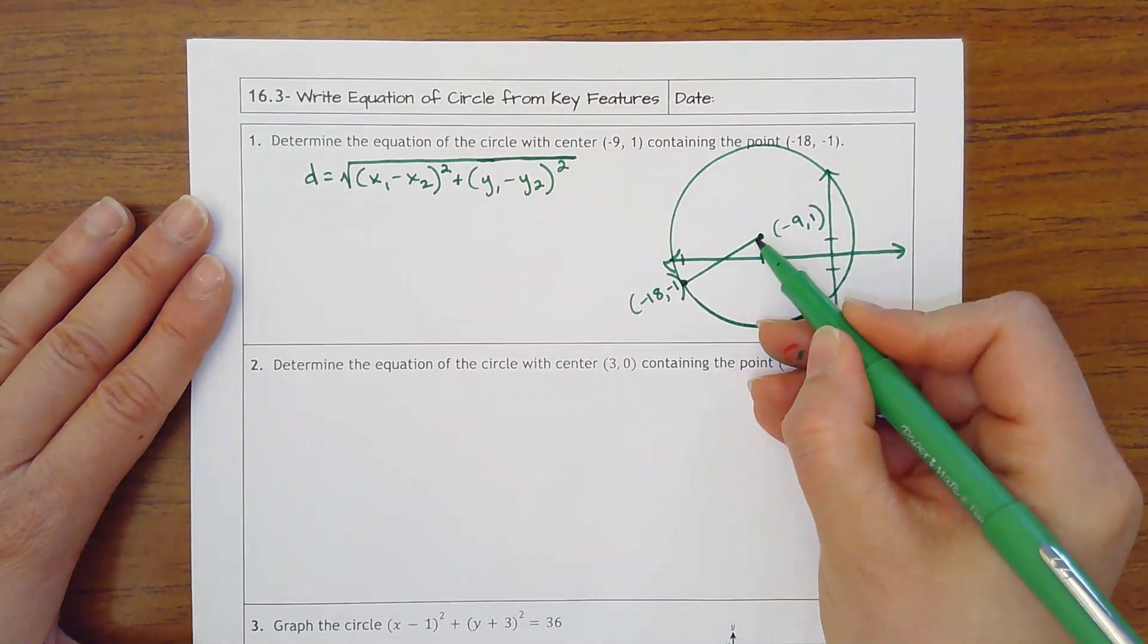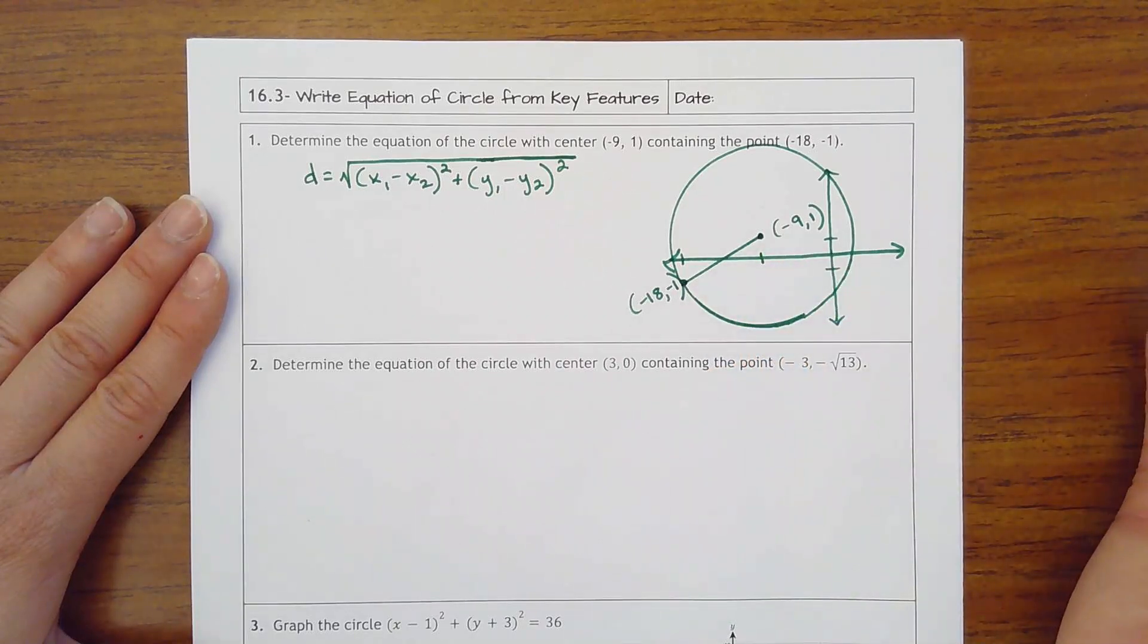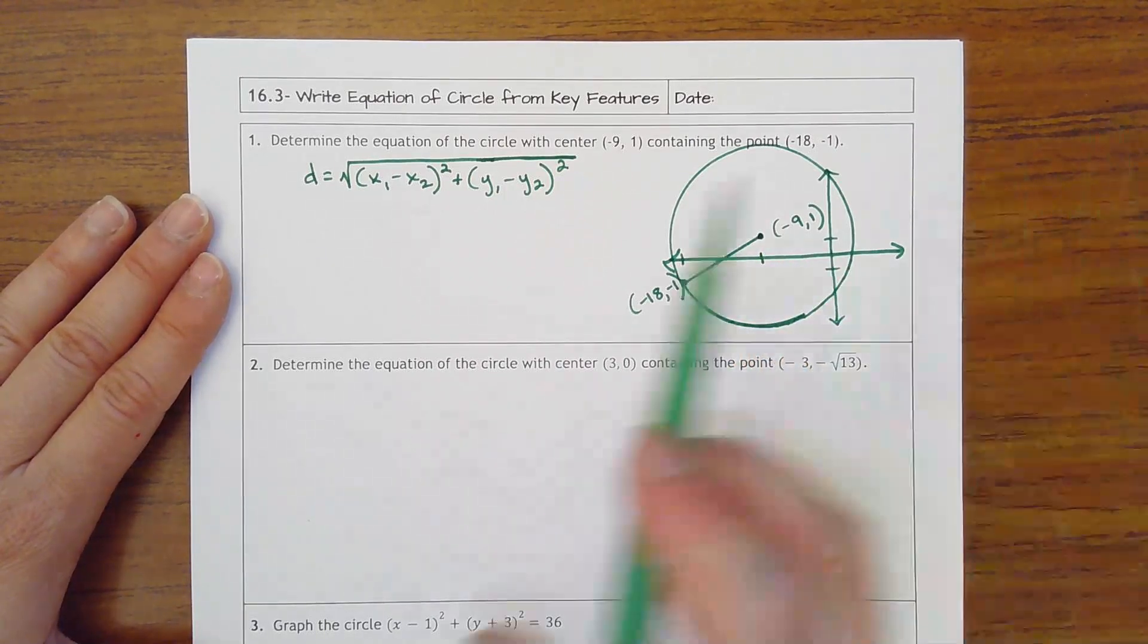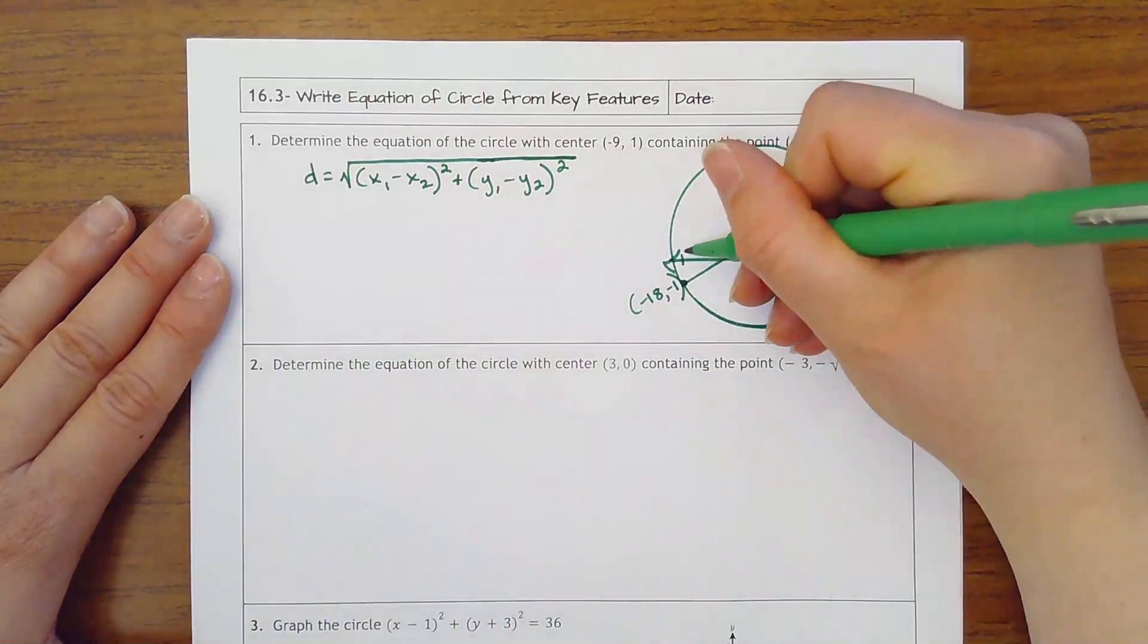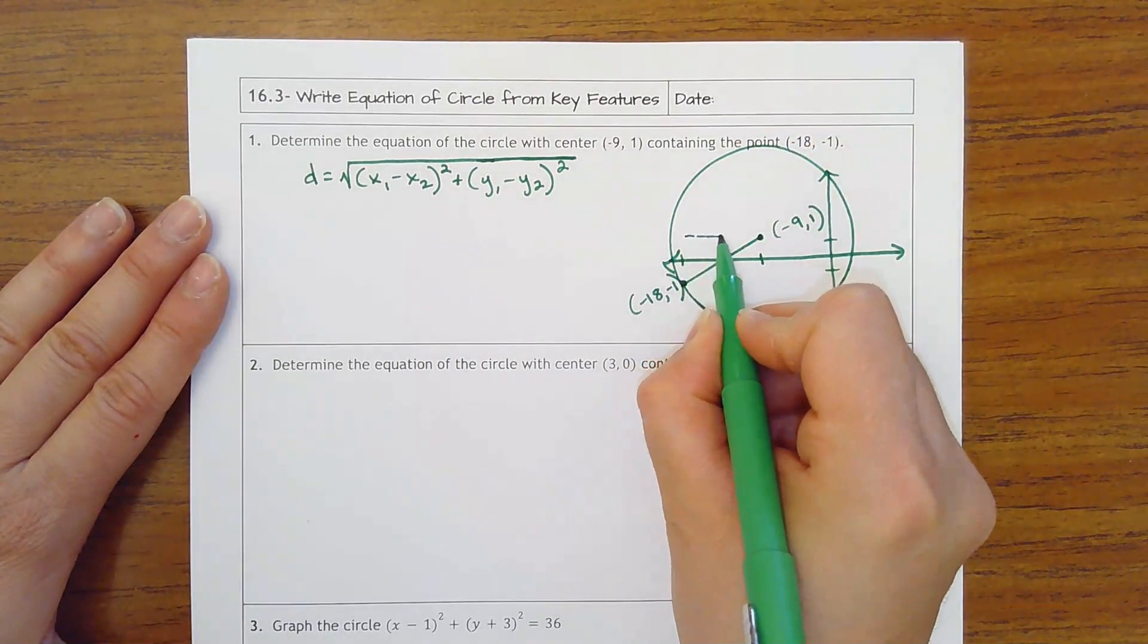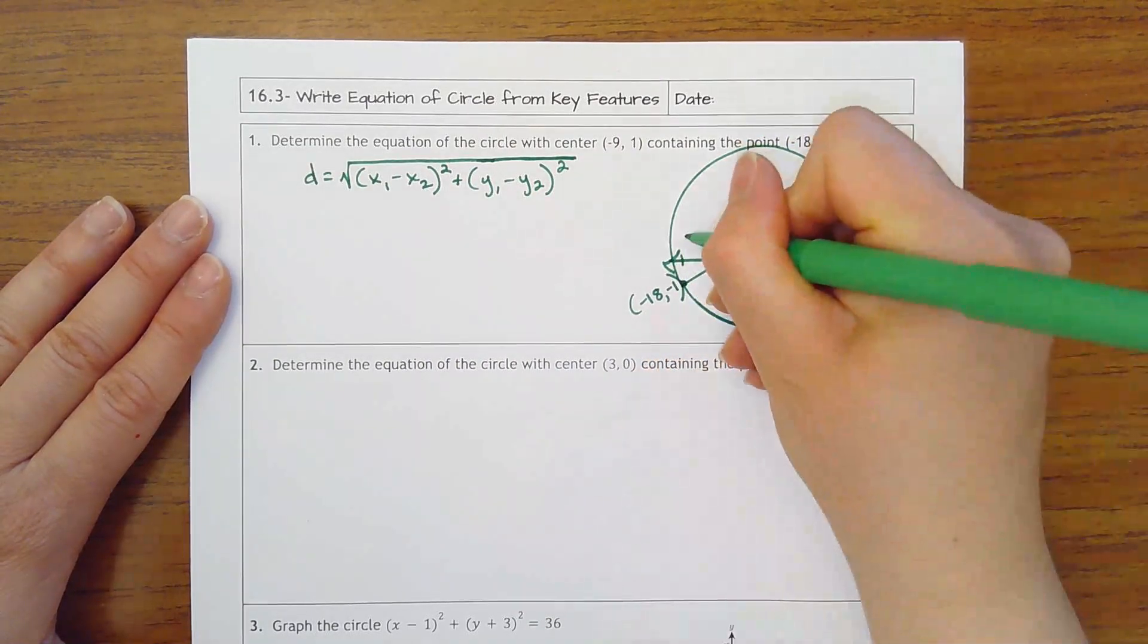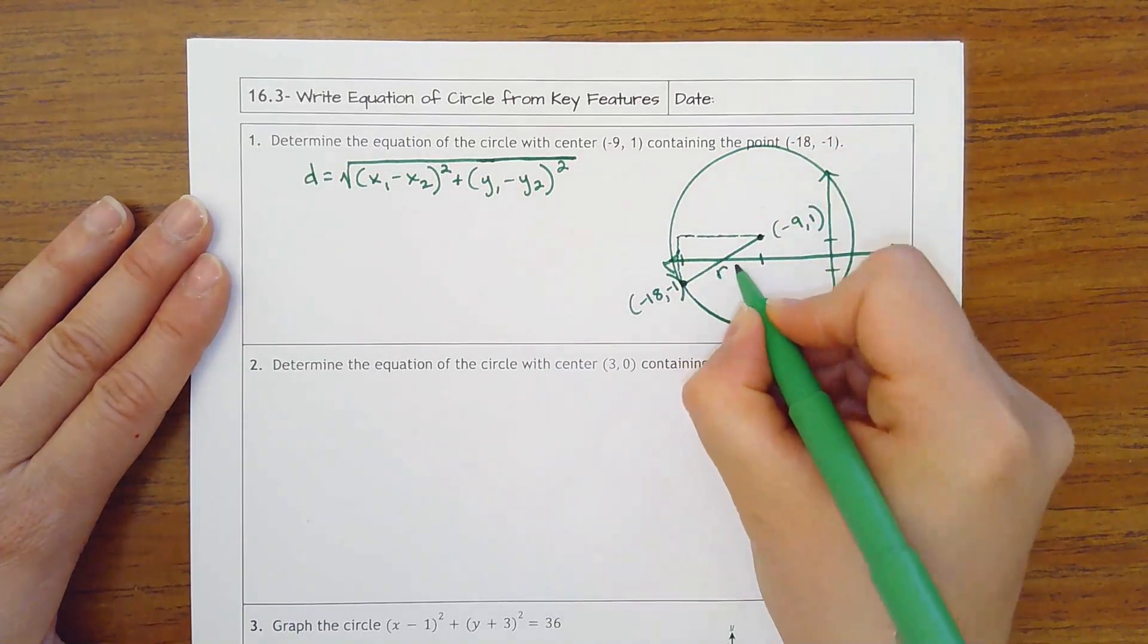When the points are diagonal you can't simply just count, you have to do distance formula. So here's distance formula again, but we also know that it comes from Pythagorean theorem. So really what I'm trying to find is I'm making this a right triangle and dropping down a leg here and here, and then this is my radius.